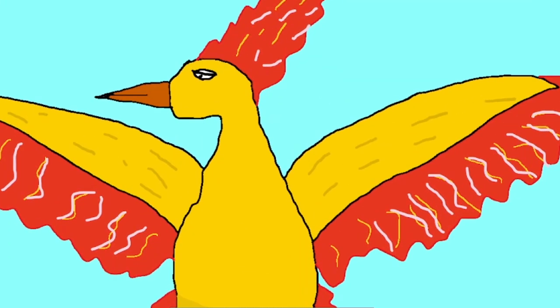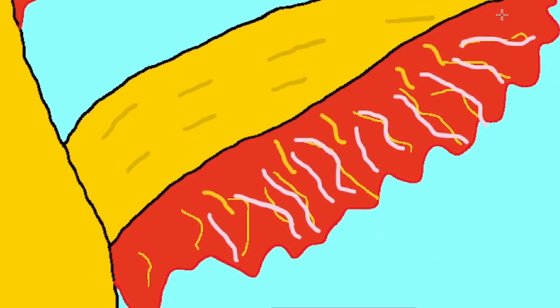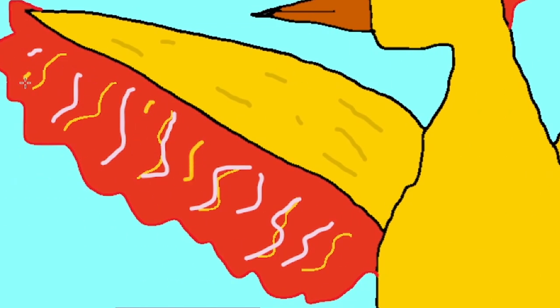At the end of the day, Moltres is still a fire-type Legendary Bird in a game without too many great fire-types. It's also a Pokemon that can learn Fly, and if you're like me and always boxed Moltres back in the day, it's a great candidate for your Elite Four team in a modern playthrough if you want to try something different.